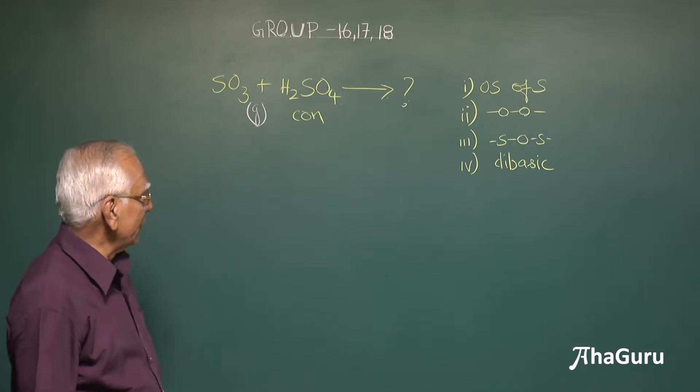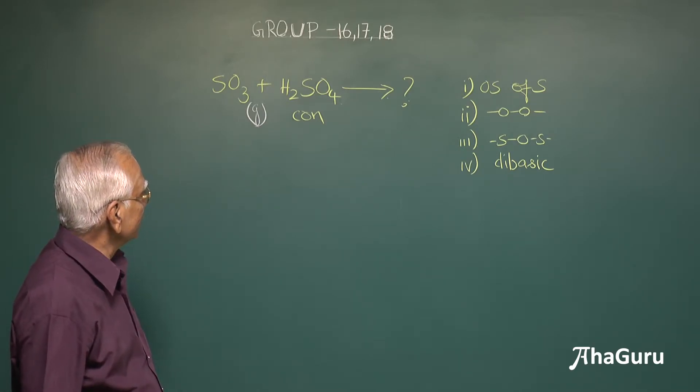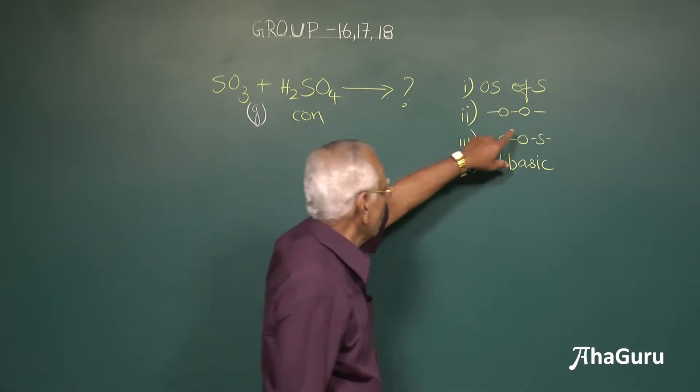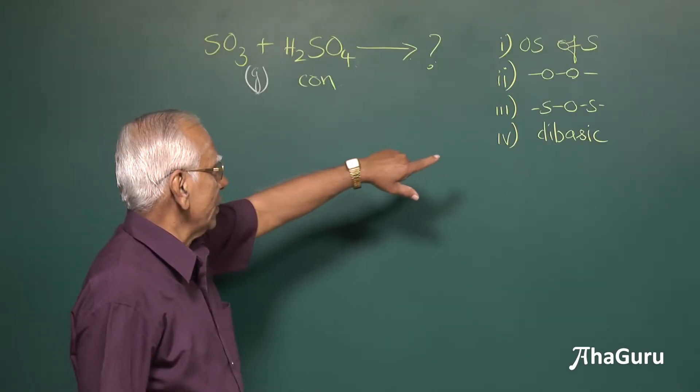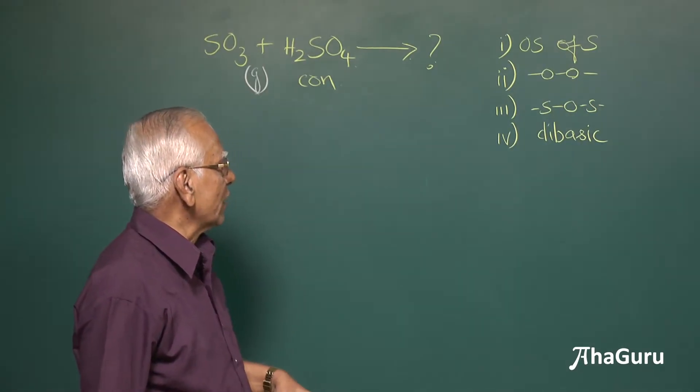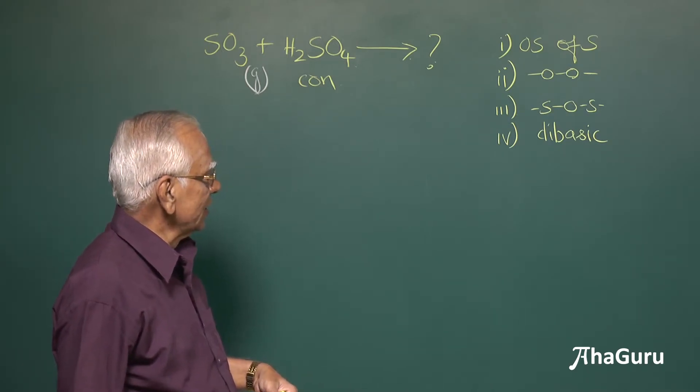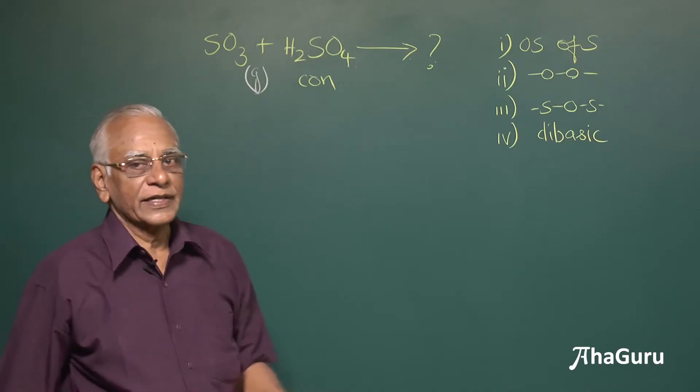And what are the statements given? You are asked to identify the oxidation state of sulfur and they say it is an example of peroxy compound, it has got oxygen-oxygen linkage or peroxy linkage or in its structure it has a sulfur-oxygen-sulfur bond and on the whole it is a dibasic acid and its basicity of these two. And you are asked to identify the incorrect statement.